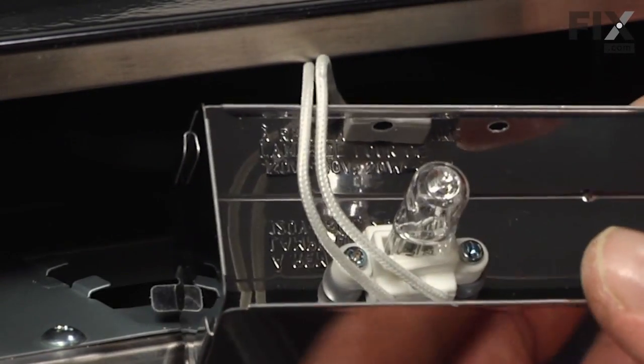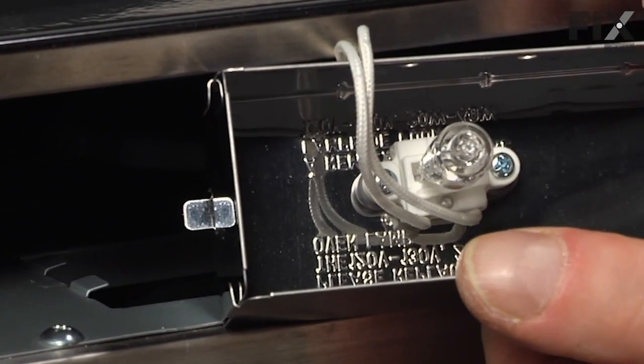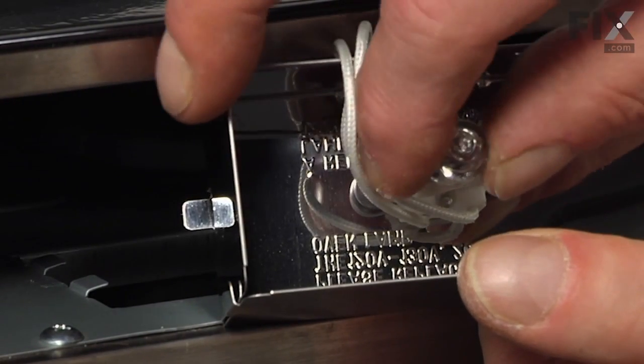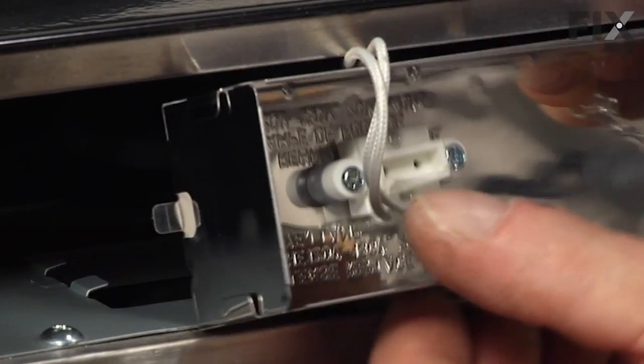There may be a bit of silicone holding that old bulb in there, so you may have to wiggle that a bit or scrape the silicone off until the bulb comes free. Take the old bulb out.